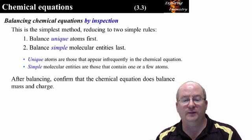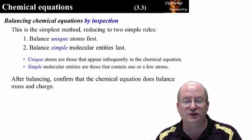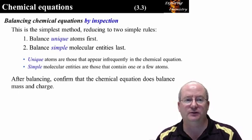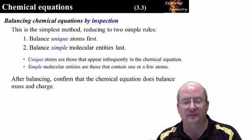In high school, you may have been taught a four to six step procedure for balancing chemical equations. Once you get good at it, the procedure can be simplified to two steps. Step one is to balance the unique atoms first. Step two is to balance the simple molecular entities last. The unique atoms are those that are not normally in chemical equations: sulfur, potassium, iron, chlorine, etc. These are balanced first because they are usually in only one or two entities per side.